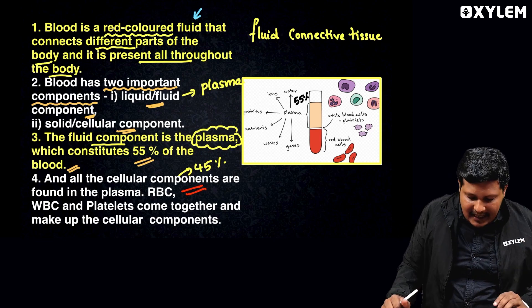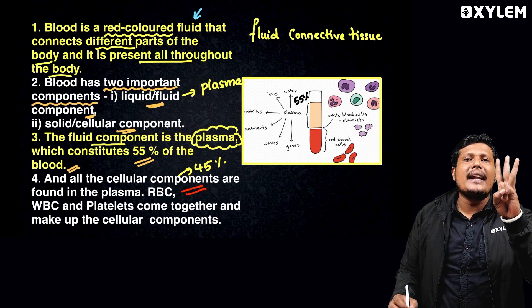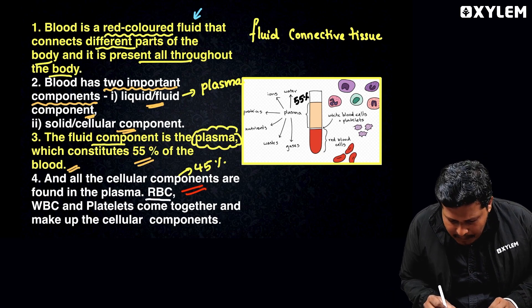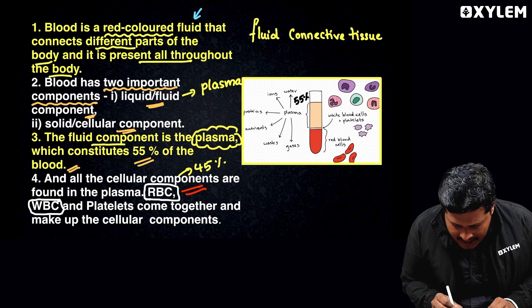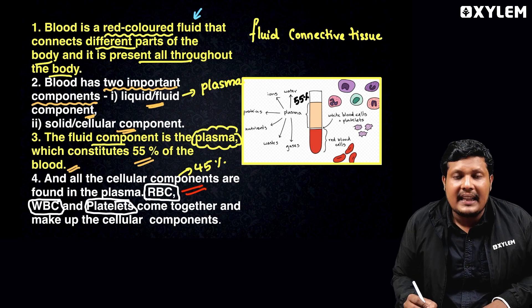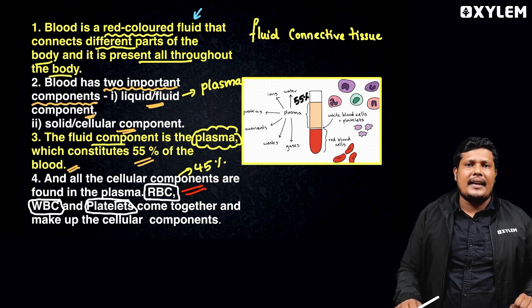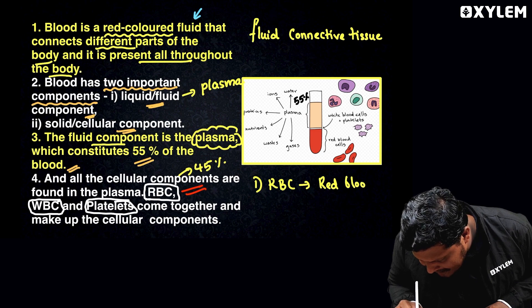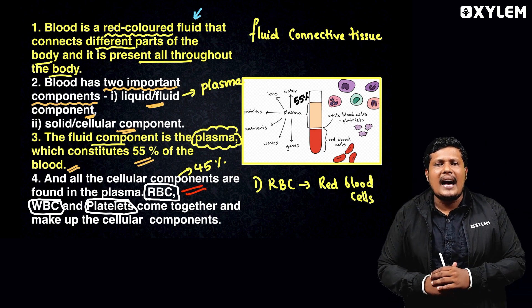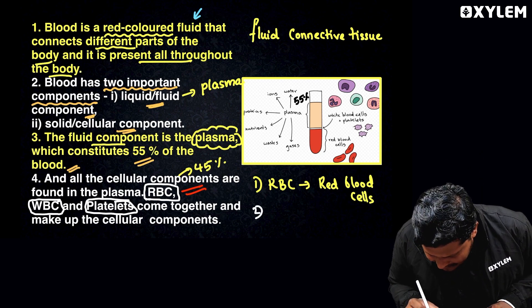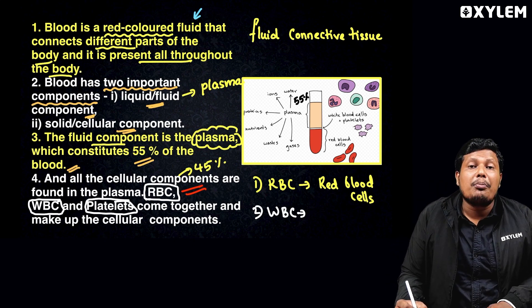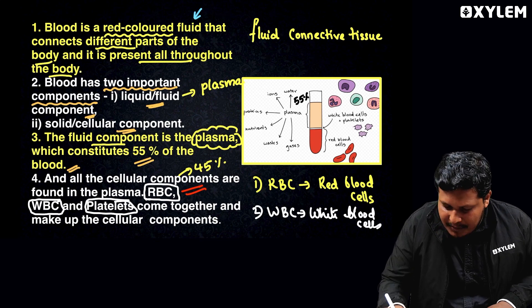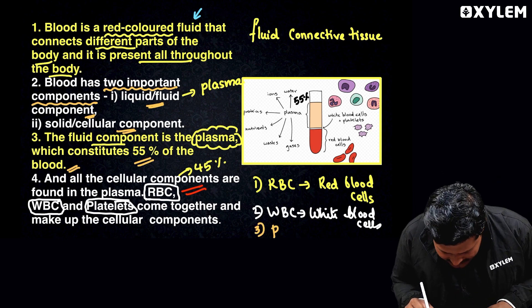Three different varieties of cells are present in the blood. These are: RBC (Red Blood Cells), WBC (White Blood Cells), and Platelets.